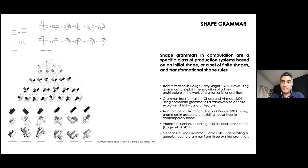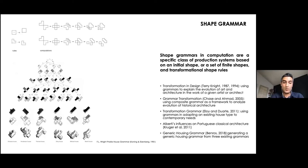To briefly explain shape grammar: in computation, shape grammars are a specific class of production systems based on an initial shape or set of finite shapes and transformational shape rules. You have an initial shape, then you have rules you can apply as many times as you want to come up with a design. Shape grammar has been used for analyzing existing examples of architecture — for example, using shape grammar to analyze Frank Lloyd Wright's prairie style houses.